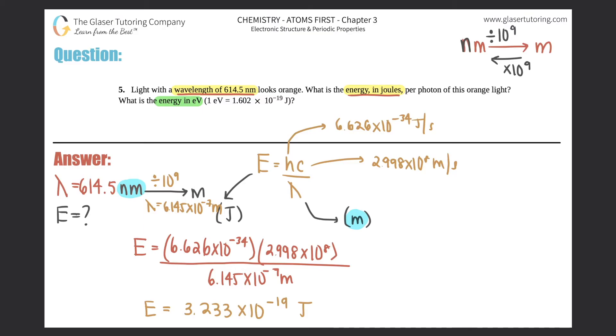We should have four sig figs. So 3.233 times 10 to the negative 19th joules. So that's how much energy in joules is needed for one photon of this orange light. So that answers this question right here. So this one is 3.233 times 10 to the negative 19th joules.